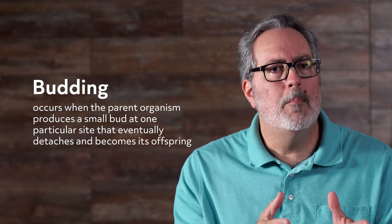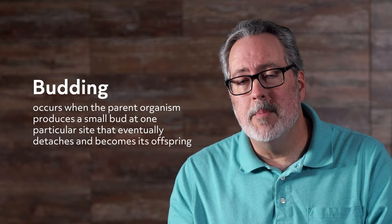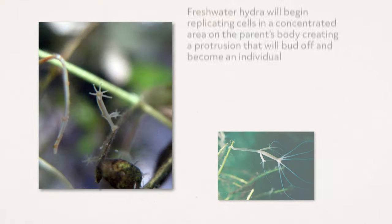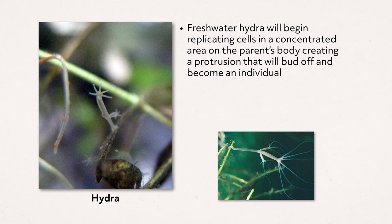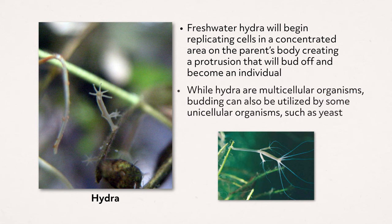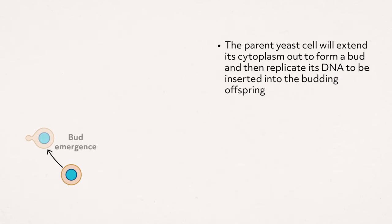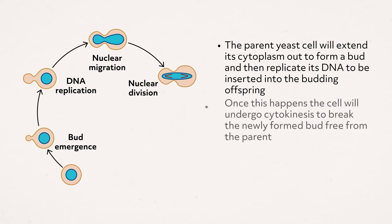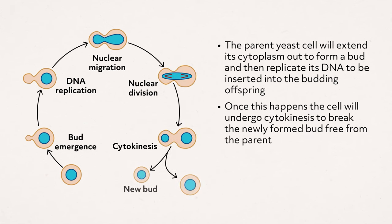Another very similar process is called budding. Budding occurs when the parent organism produces a small bud at one particular site that eventually detaches and becomes its offspring. Some plants and simple animals reproduce this way — for example, freshwater hydra will begin replicating cells in a concentrated area, creating a protrusion that will bud off and become an individual. Budding can also be utilized by unicellular organisms such as yeast. The parent yeast cell will extend its cytoplasm out to form a bud, replicate its DNA to be inserted into the budding offspring, and then undergo cytokinesis to break the newly formed bud free from the parent.